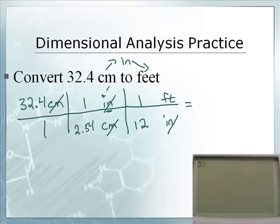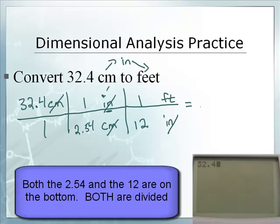Now this is a very important thing to understand. We have two numbers and they're both on the bottom, so on your calculator you're going to push divide, divide. So 32.4 divided by 2.54 divided by 12. Do not hit the multiply sign. 1.062992126, I'll stop there.